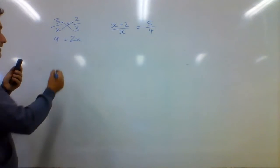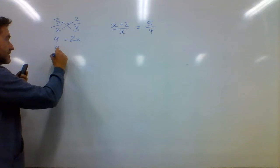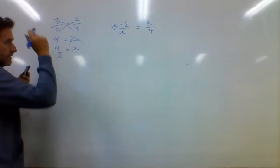So 9 equals 2X, so 9 divided by 2 will equal X. Easy.